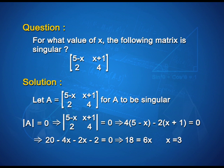This implies 20 - 4x - 2x - 2 = 0, which simplifies to 18 = 6x. Therefore, x is equal to 3.